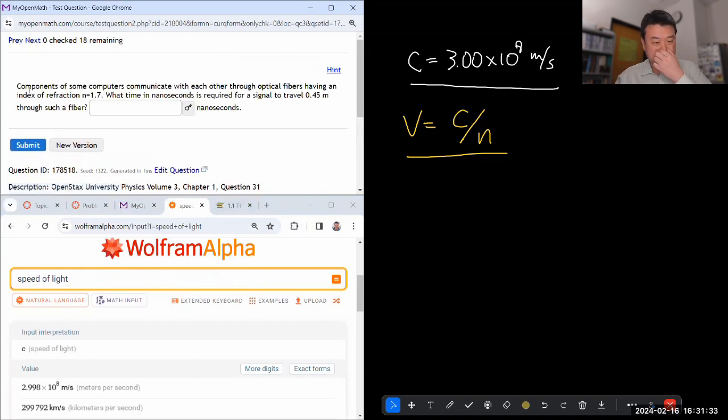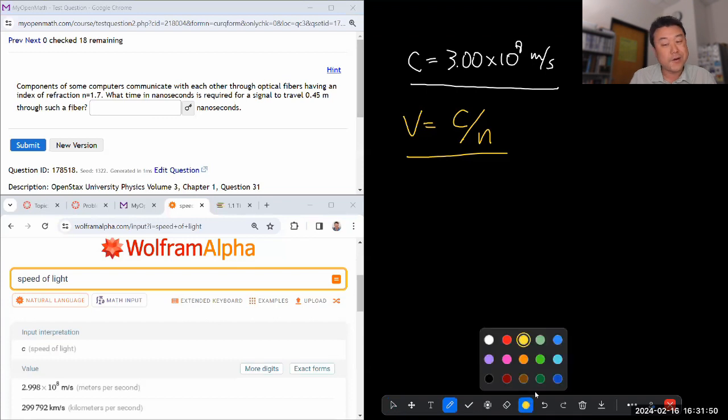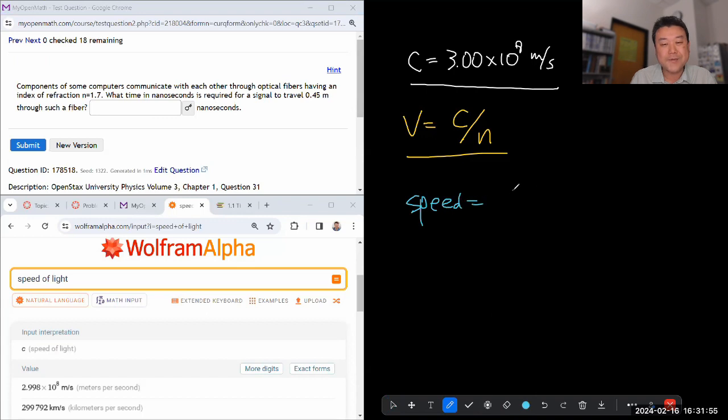Okay, components of some computers communicate with each other through optical fibers which has light going through, and they have this index of refraction. What time in nanoseconds is required for a signal to travel that distance? Okay, so this is kind of calling you back to physics 4A where we learned, or even maybe before that, that speed is described by distance per time.